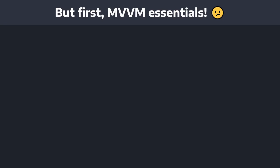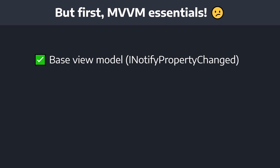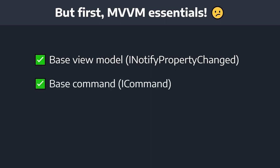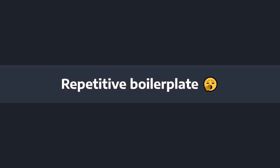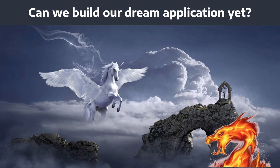One of the first things we need to do is add some MVVM essentials to our project. So you might create a base view model that implements INotifyPropertyChanged, you might create a base command that implements the ICommand interface, and maybe you spin up some navigation infrastructure so that you can easily switch between pages in your application. But the issue is that this is all boilerplate, and we need to write it ourselves — taking time away from building our dream application, solving problems, and writing our domain logic.